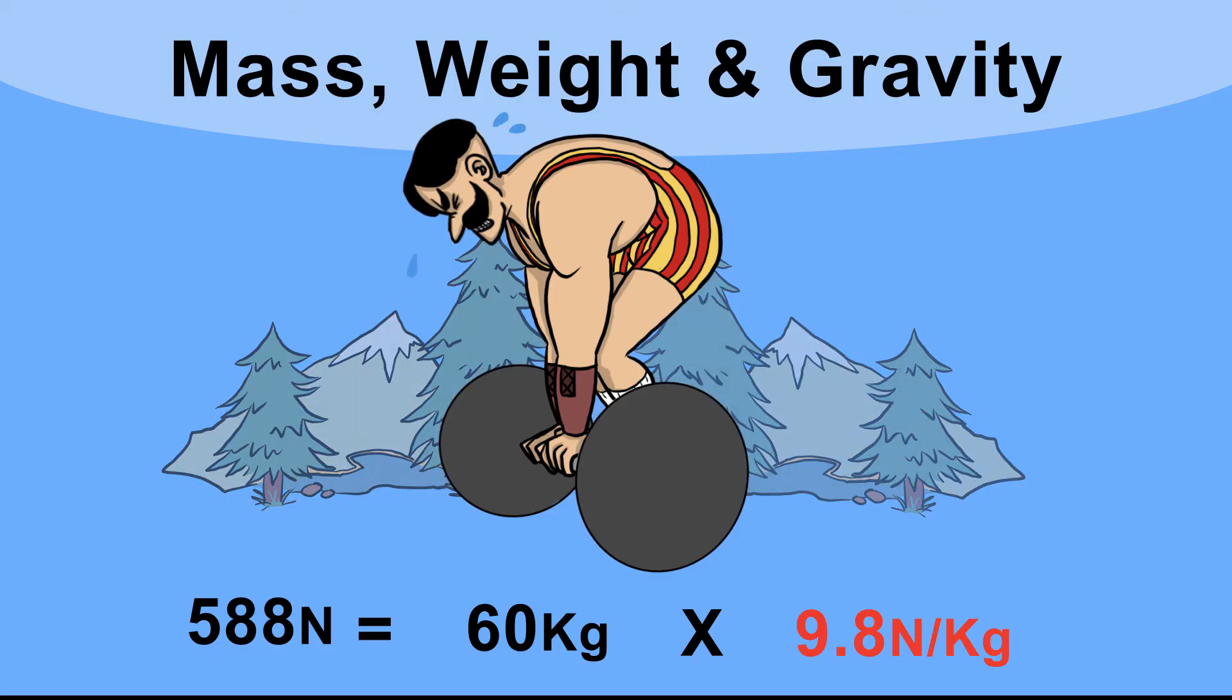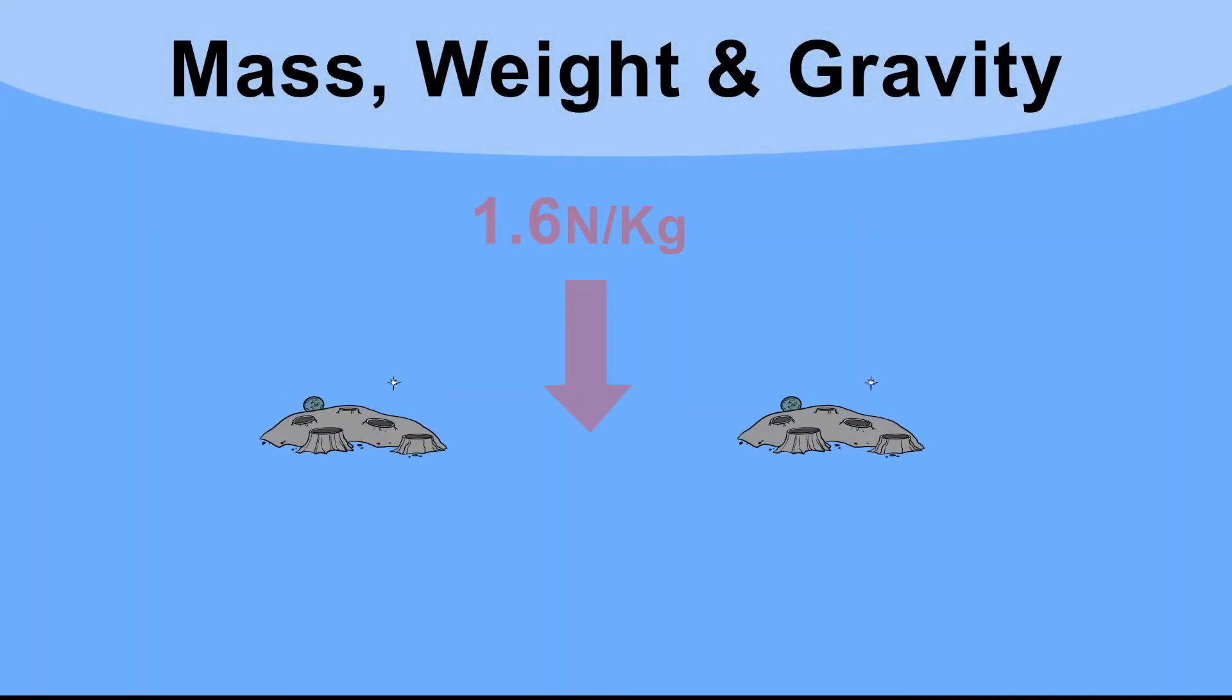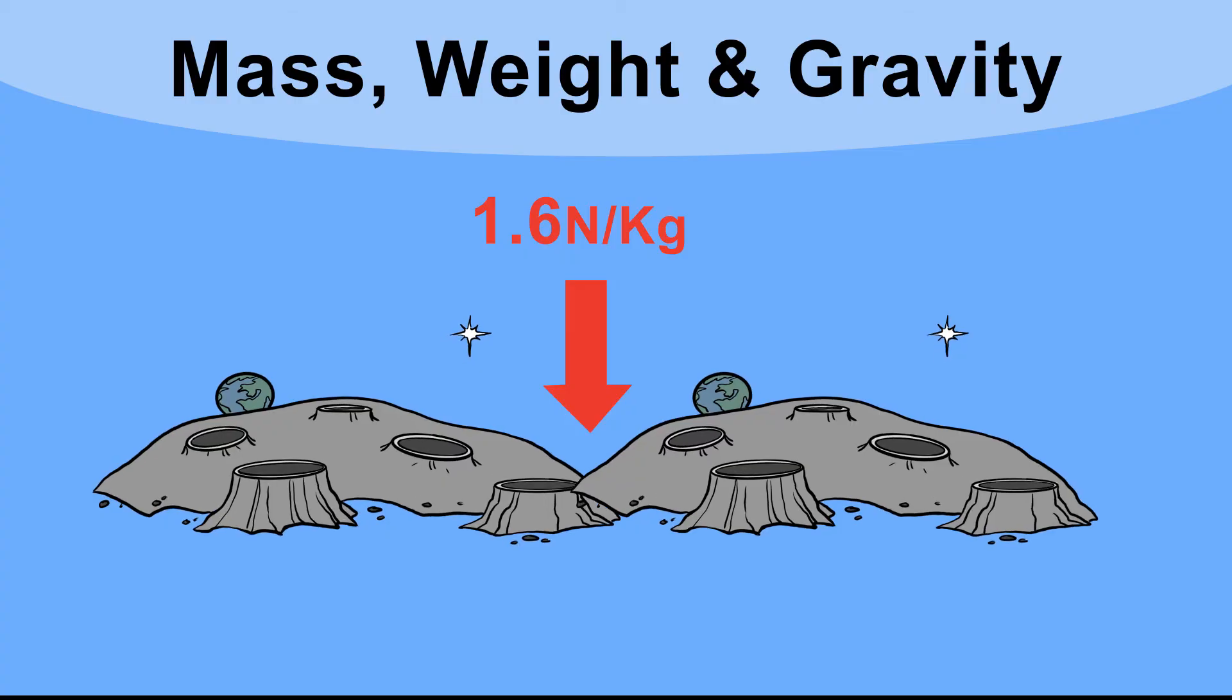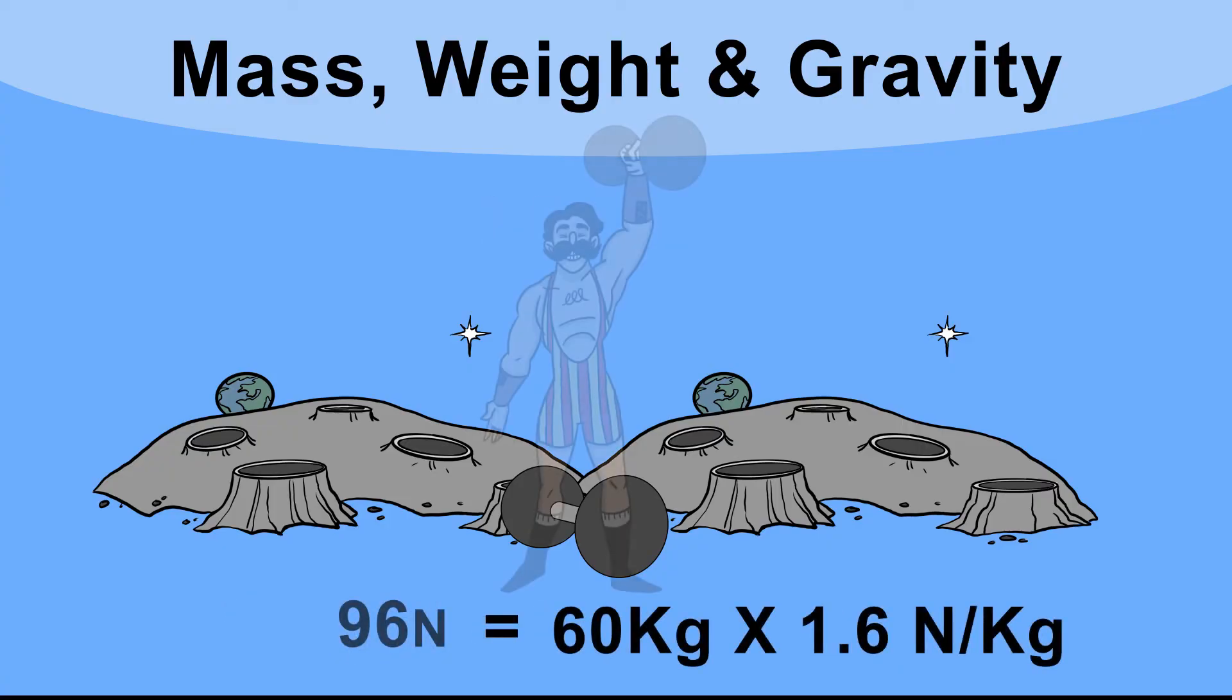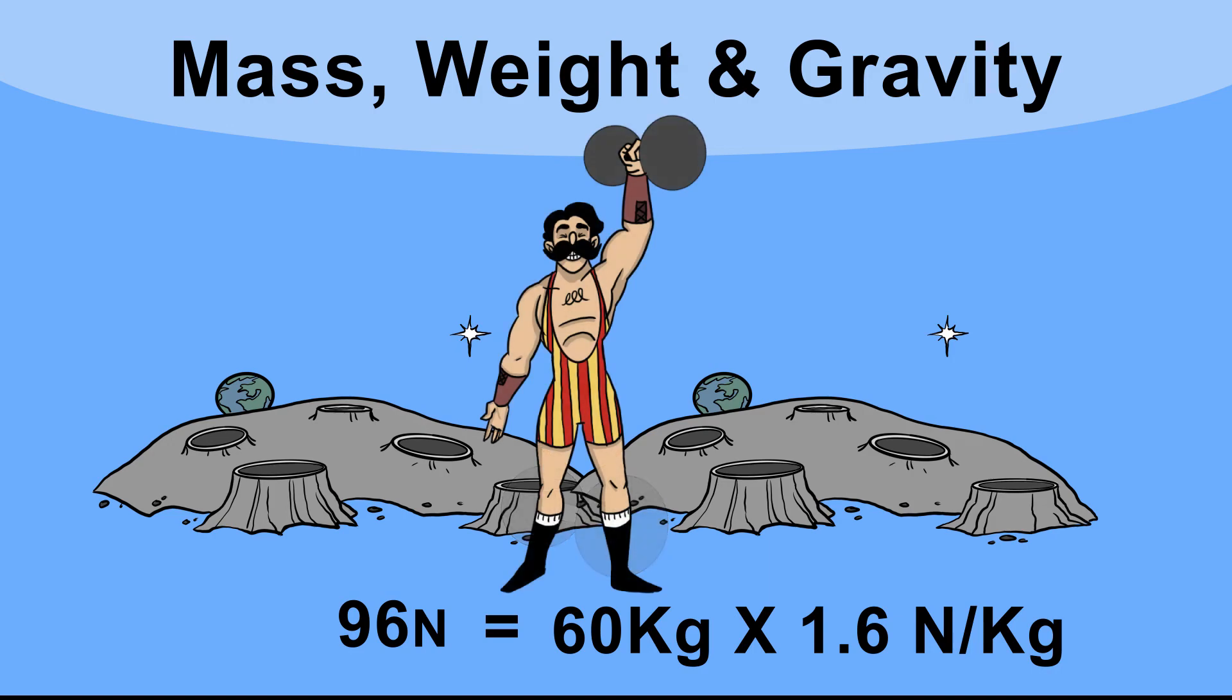But what if we go to the Moon? The gravitational field strength on the Moon is only 1.6 newtons per kilogram. So the weight of the dumbbell there is only 60 times 1.6, which is 96 newtons—really easy to pick up.